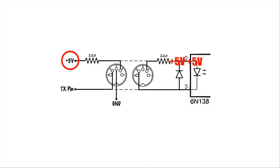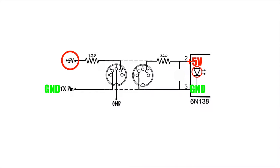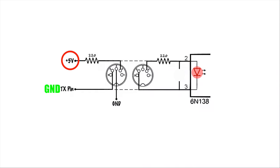Now we'll see what happens when the MIDI signal goes low. The top 5-volt supply will remain at 5 volts, but the TX pin is now low and will drop to 0 volts, also referred to as ground. You can see that the diodes now have a voltage difference across them. The small signal diode has more voltage on its cathode than its anode, so it will not pass current. The LED, on the other hand, has 5 volts more on its anode than its cathode. Since it only requires a 1.3-volt difference, this is more than enough to turn it on. As soon as the LED turns on, current will start flowing through it — traveling from the 5-volt supply through the resistors, through the LED, and to ground.